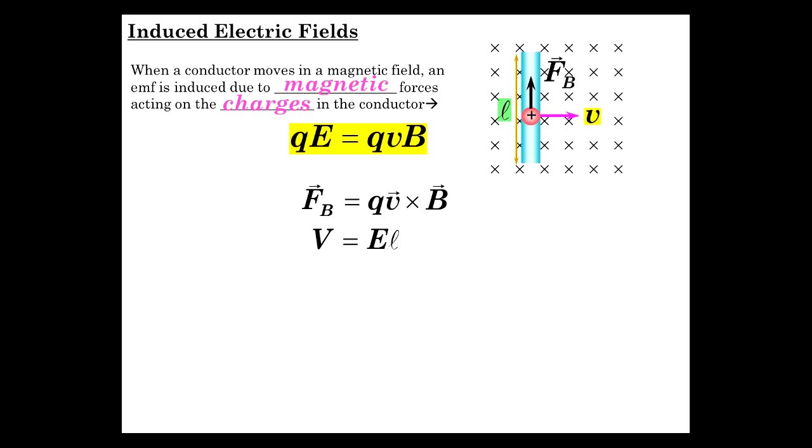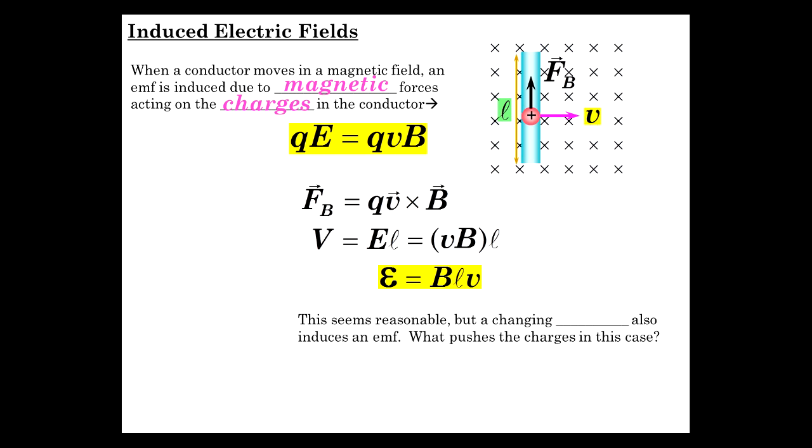When we have this force countered by the QE, we have voltage, potential difference established across here, equal to E field times L. E equals VB, so that's VBL. So EMF induced is BLV. We've covered that already. It all seems reasonable. We've got these moving charges in a magnetic field, and that's what magnetic forces act on.